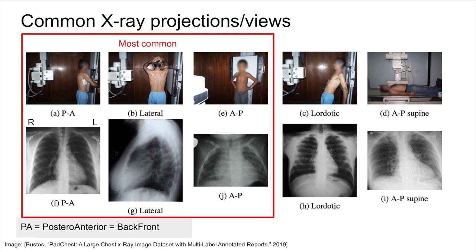The frontal view is the most standard. This can be taken from back to front, known as the posterior-anterior, or from front to back, known as the anterior-posterior. These are often considered interchangeable, but there are some subtle differences. A lateral view is taken from the side and is often taken to complement a frontal view. The AP supine view is when a patient is laying down — it is often for patients who cannot stand up and typically is of lower quality.